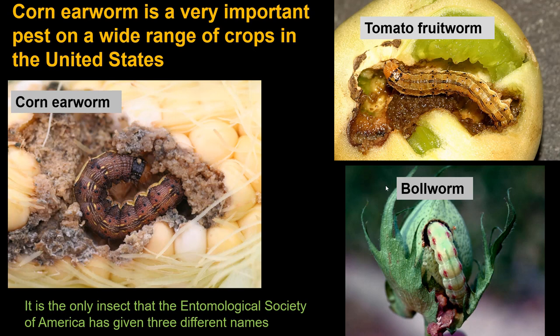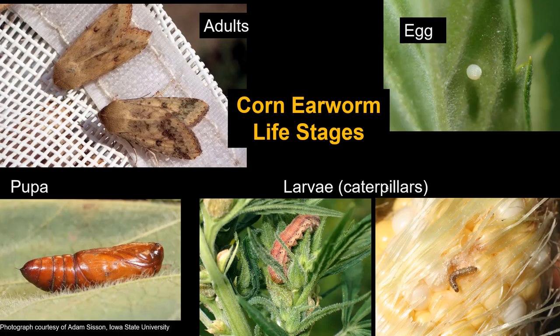You've probably seen this insect if you bought sweet corn and there's a caterpillar in the ear tip. It goes by a couple of other names formalized by the Entomological Society, which reflects how widespread this insect is on so many crops. It might be referred to as the tomato fruit worm on fruiting vegetables like peppers or tomatoes, and in cotton it's called the bollworm.